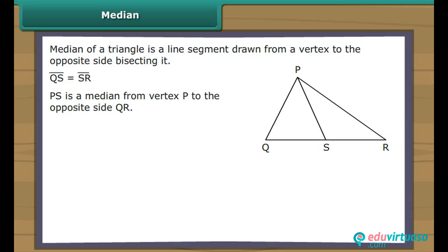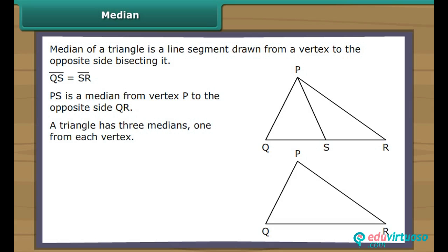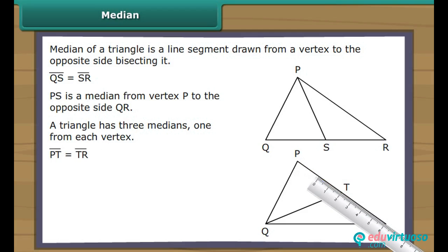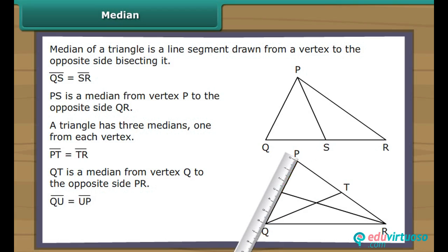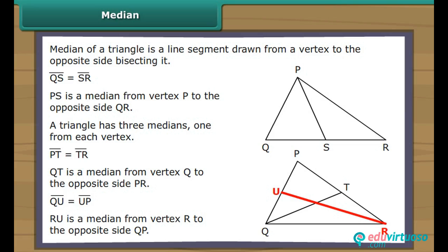A triangle has three medians, one from each vertex. We draw a line segment from Q to cut PR into two equal halves at point T. Therefore, QT is a median from vertex Q to the opposite side PR. We draw one more line segment from R to cut QP into two equal halves at point U. Therefore, RU is a median from vertex R to the opposite side QP.